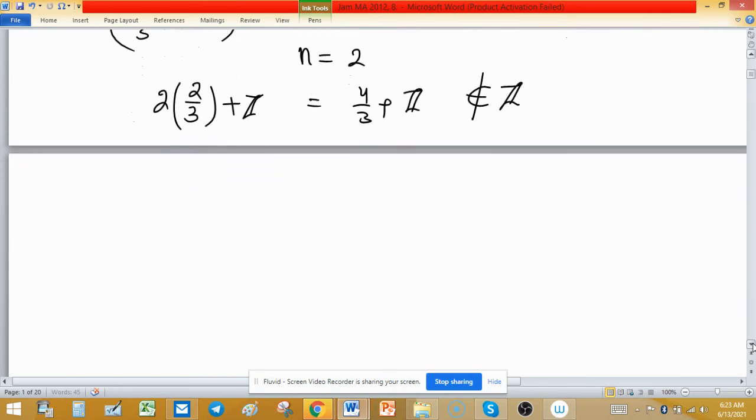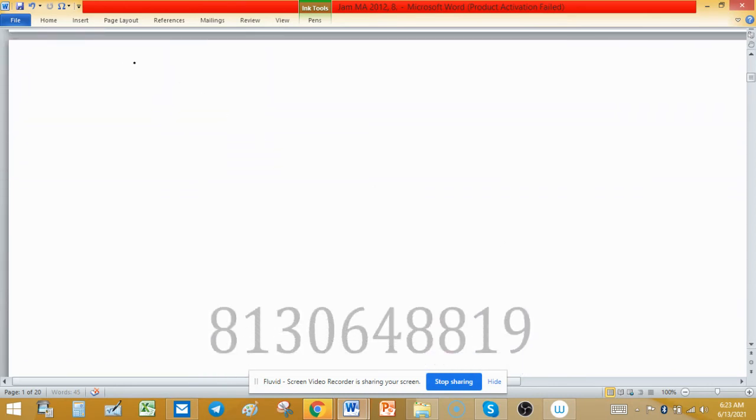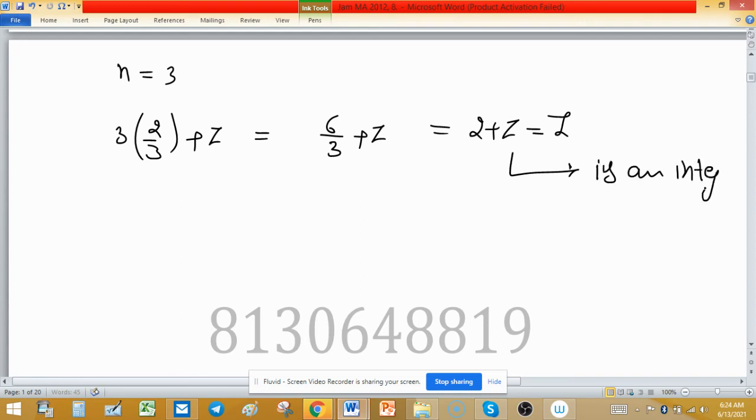Now put n equal to 3. So 3 times 2/3 + Z equals 6/3 + Z equals 2 + Z equals Z. So order of 2/3 + Z means this is an integer, and this is least.